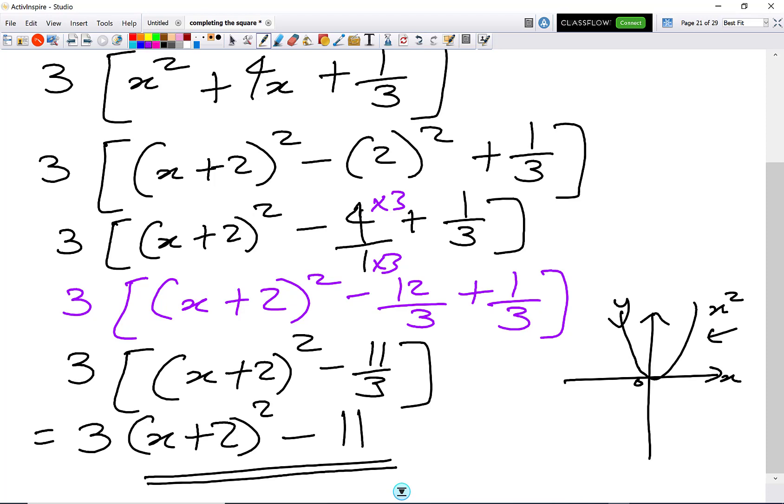Move it along to -2 because we've got +2 in the brackets, like so. And don't forget, the 3 on the outside only affects the y value. So the x value is still remaining at -2, and we're going to bring it down to -11. (-2, -11) is the turning point of that graph.